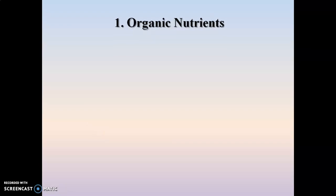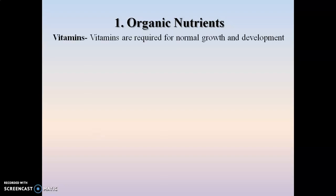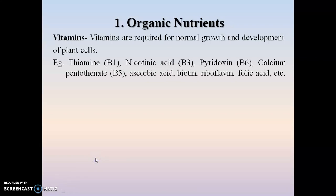Organic nutrients such as vitamins, amino acids, and other organic supplements need to be added to the nutrient medium. Vitamins are required for the normal growth and development of the plant cell. Although vitamins are normally synthesized by the plant cell, in tissue culture they are not synthesized in sufficient quantity. Hence there is a need to add vitamins in the nutrient media for optimum growth. Vitamins like thiamine, nicotinic acid, pyridoxine, calcium pantothenate, ascorbic acid, biotin, riboflavin, and folic acid are essential ingredients for the growth of plants.